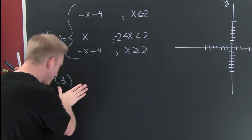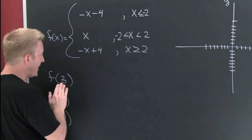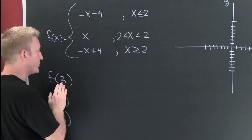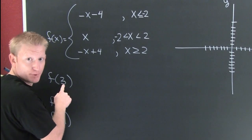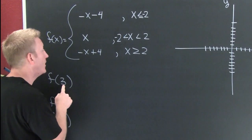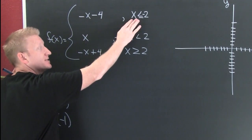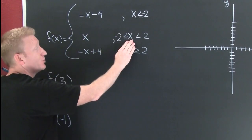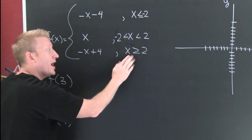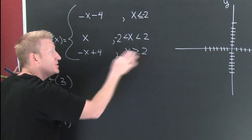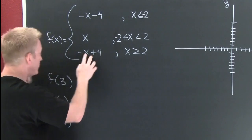I want to evaluate this particular piecewise function when x is bigger than 3. That's going to tell me which piece I'm in. Am I in the piece for values less than minus 2? No. Am I in the piece for values between minus 2 and 2? No. I am in the piece for x bigger than 3 — so I use that one.